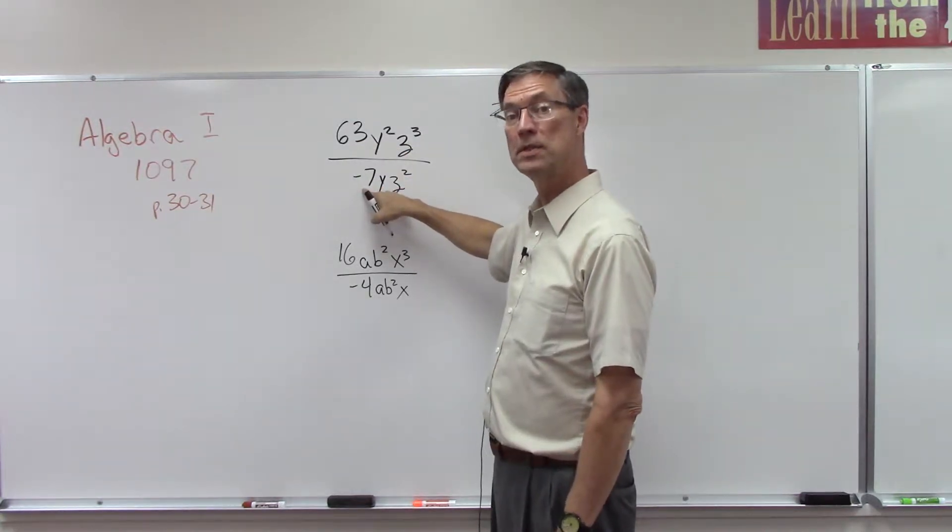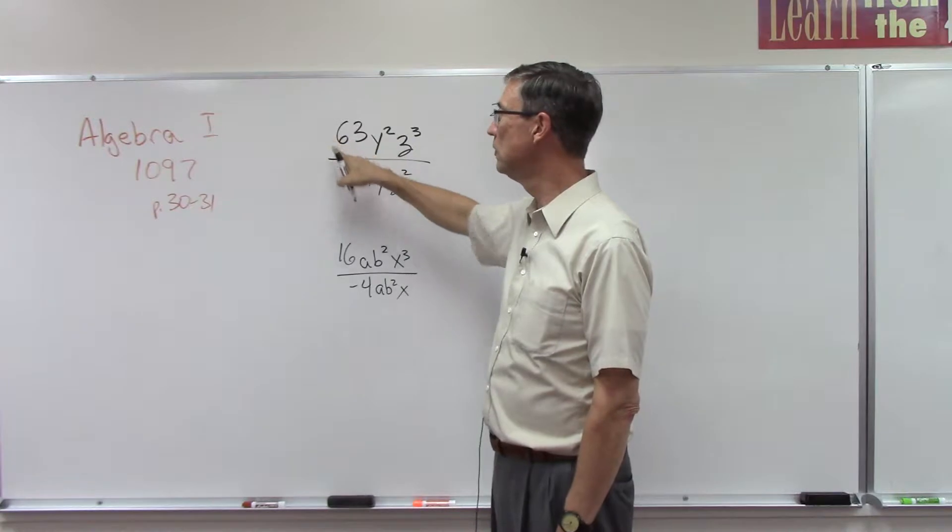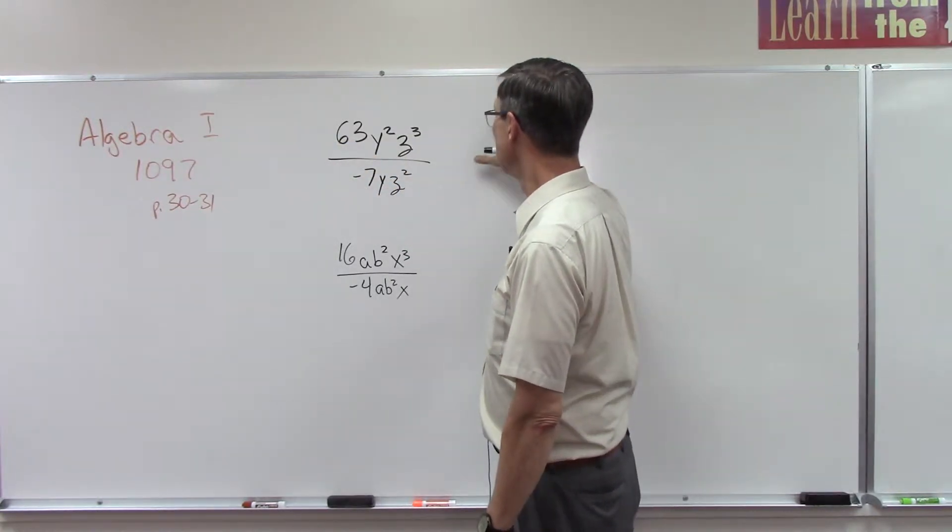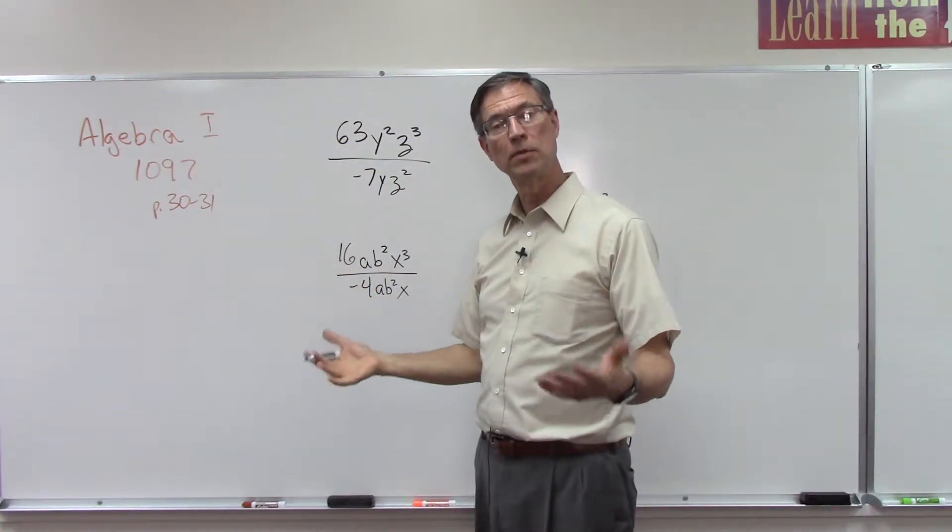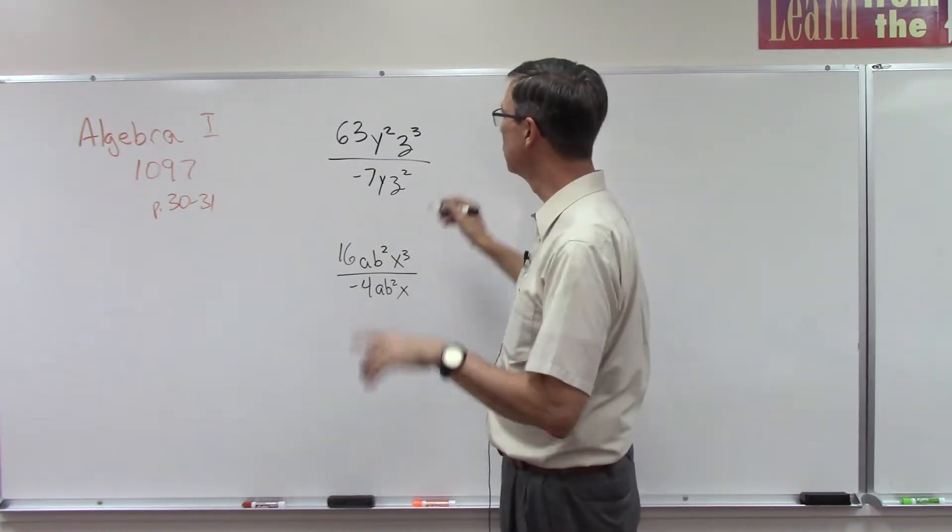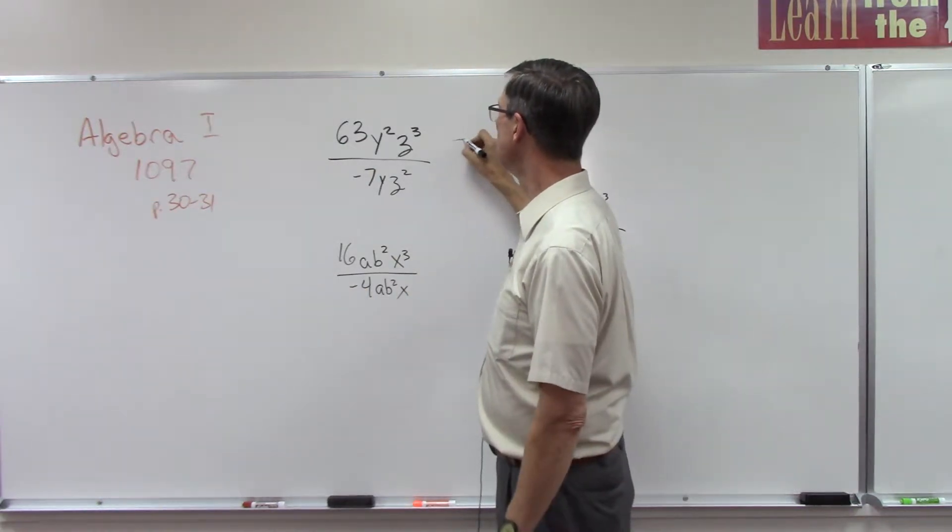I remember if we have a positive divided by a negative, the answer is always negative. If the signs are different, the answer is negative - that's for division. So I know this will be -9.